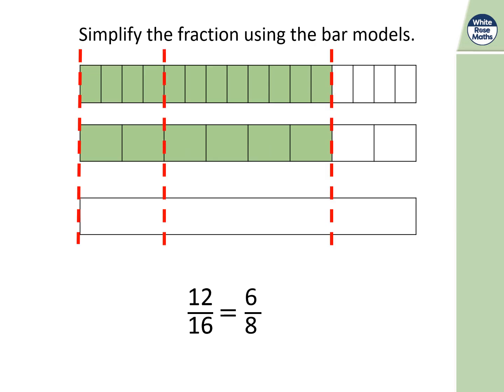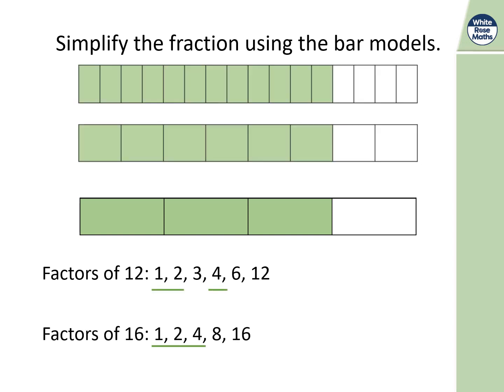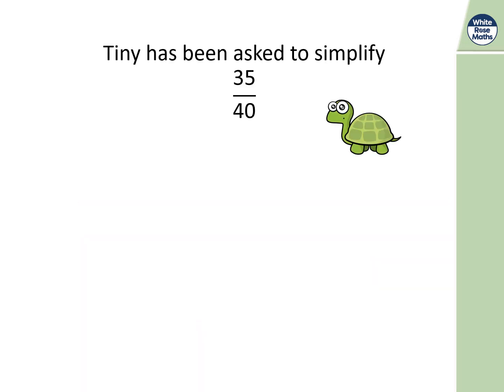Simplify six eighths by dividing by two. An important tip: if both numbers are even, you can always halve them — divide by two. You don't have to simplify in one step. The main goal is understanding what highest common factor means. Looking at 12/16, the highest common factor is four, so divide top and bottom by four to get three quarters.